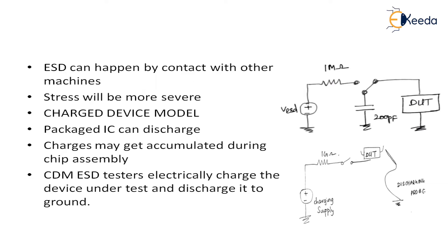ESD can happen by contact with another machine, but this time the stress will be even more. When a human touches the device there will be certain charges, but if a machine — it will be metal — there will be a lot of charges and a lot of ESD when some other machine comes in contact with our chip. I'm simulating that with the help of a 200 pF capacitor — the charged device will be discharged through a 200 pF capacitor.